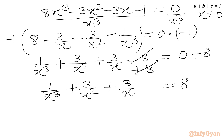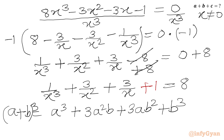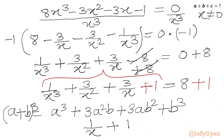Now we recall the algebraic formula: a³ + 3a²b + 3ab² + b³ = (a + b)³. Comparing with our equation, we consider a = 1/x and b = 1. But in the LHS we are missing the b³ = 1 term, so we add 1 to both sides. Our LHS becomes (1/x + 1)³ and RHS becomes 9.